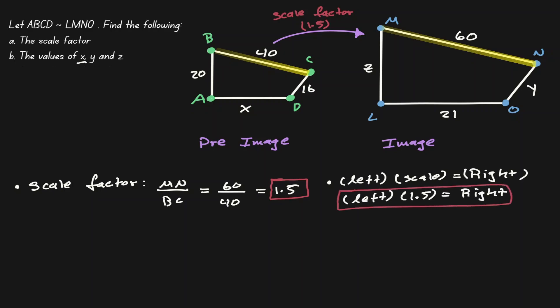Now let's find the value of X, Y, and Z. X is the length of line segment AD, and AD matches with line segment LO. Using the relationship we defined, if we take X and multiply by 1.5, we should get the length of the right-hand side, which is 21. Because this is a multiplication, we divide by 1.5, giving us X equals 14.